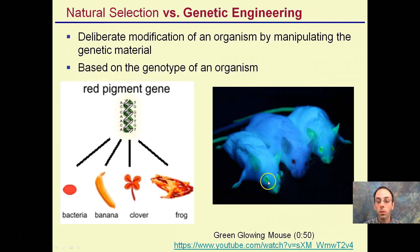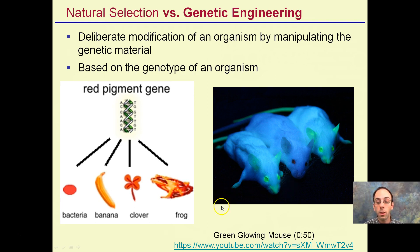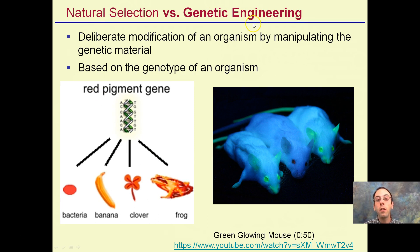Here are mice with glowing eyes — we're genetically modifying those particular mice. If you want to see what one looks like in real life, we have a green glowing mouse YouTube video, with a link provided here. Hopefully this clarifies a little bit about natural selection versus genetic engineering and what each individually does.